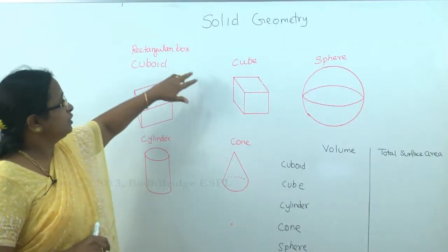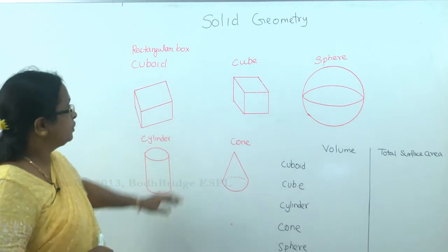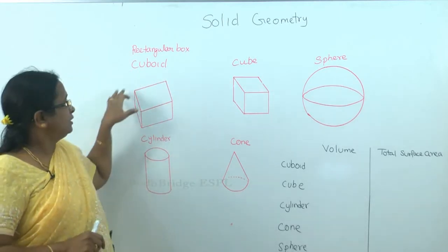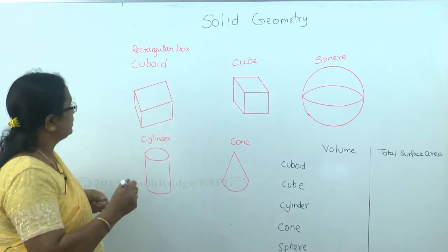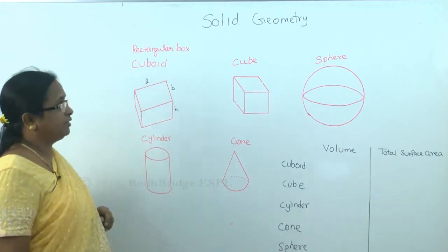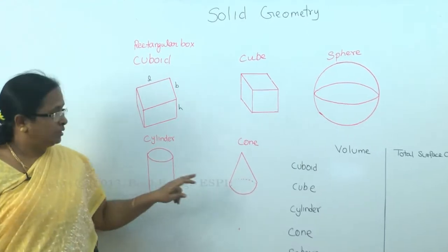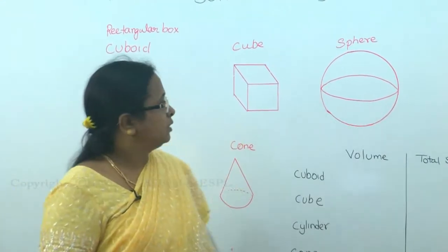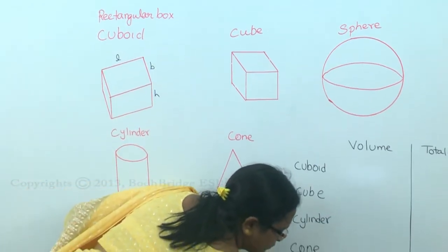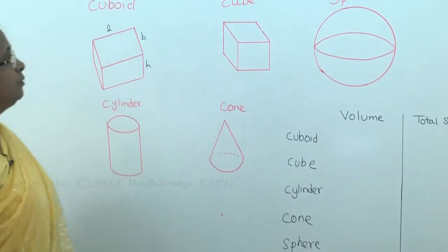In solid geometry, you are going to see the rectangular box, also called a cuboid, and the cube. The difference is that in a cuboid, all three sides — length, breadth, and height — need not be the same. In a cube, all three sides are equal. You will also see the cylinder, cone, sphere, and hemisphere. Hemisphere is nothing but half of the sphere.